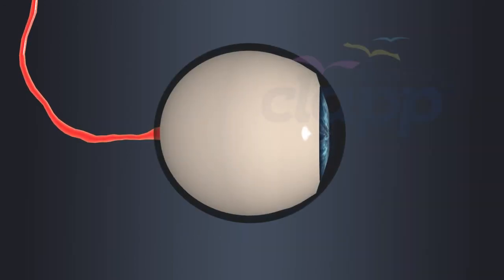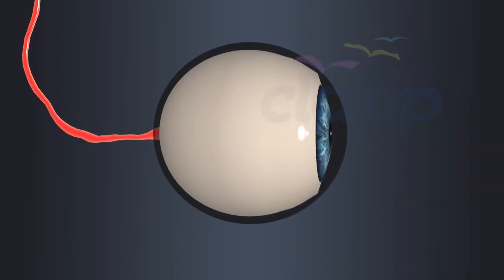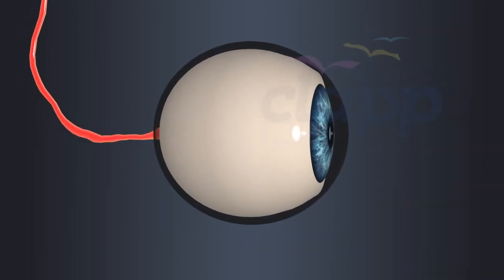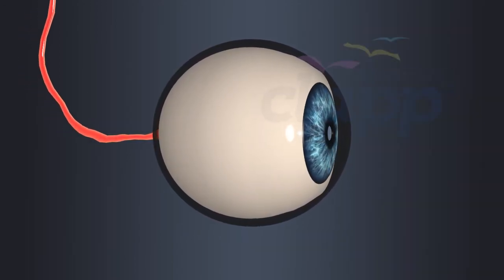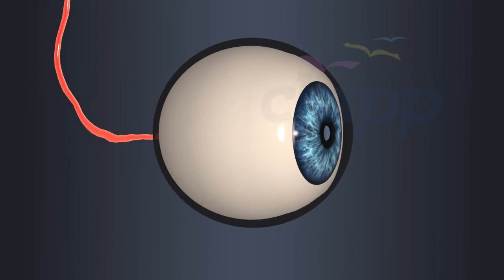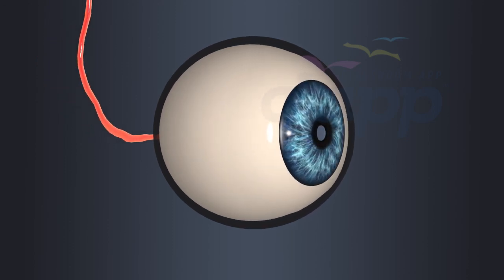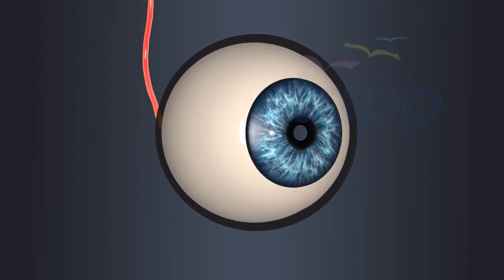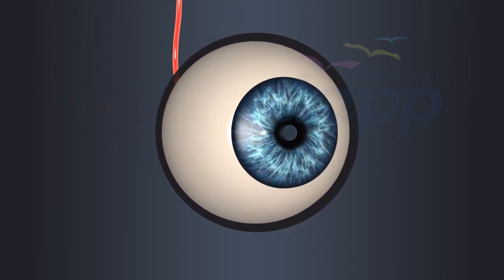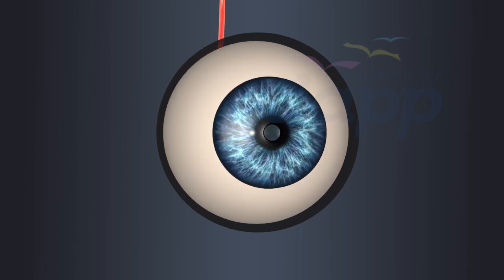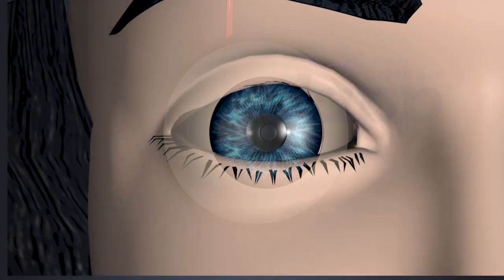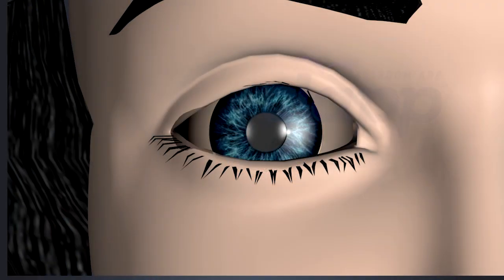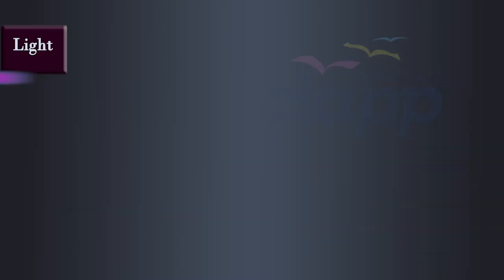It is important to note that this is a simplified explanation of the workings of the human eye. The eye is a highly intricate and sophisticated organ with many other components and processes involved in its functioning.